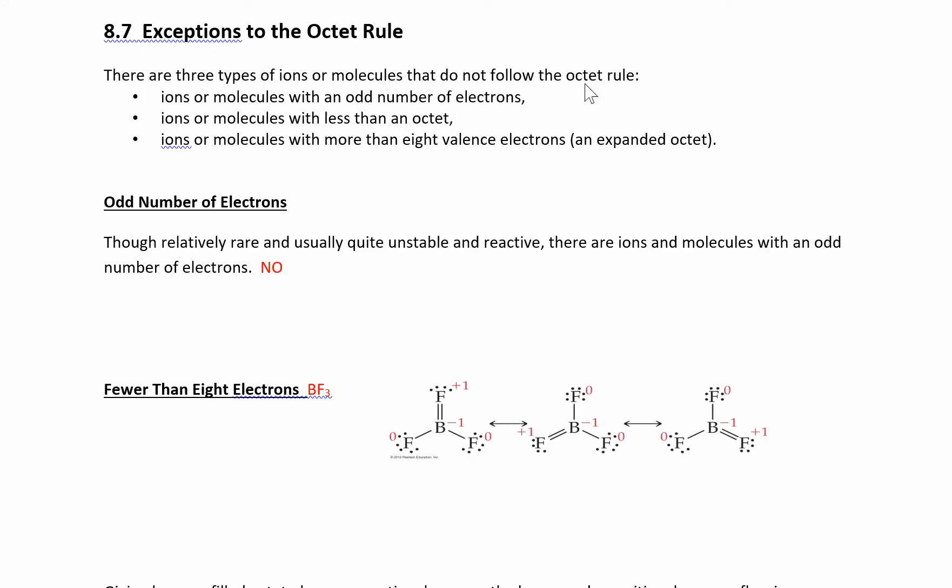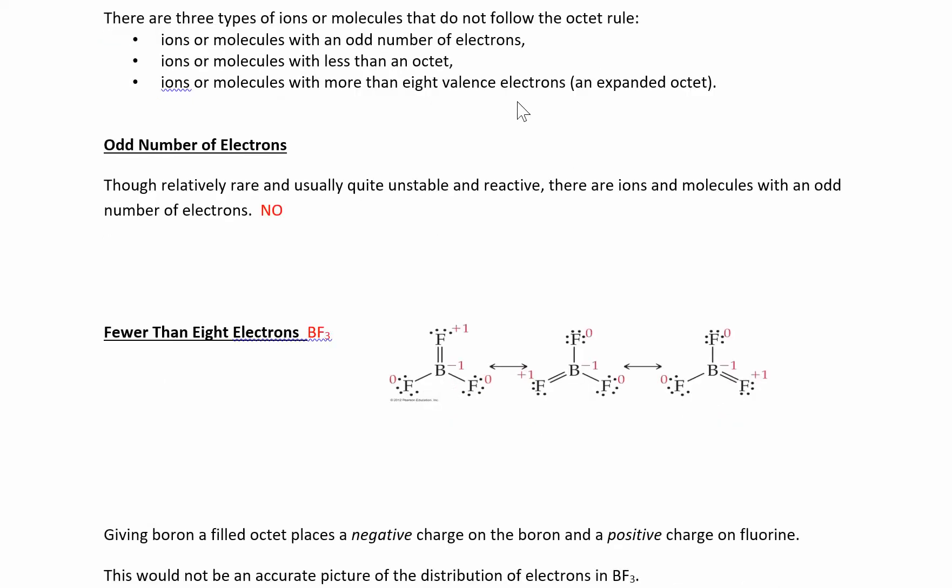You won't be able to have eight electrons around something if you only have an odd number of electrons. Remember we were putting everything in pairs. So if you have an odd number, you're not going to have pairs. Or if some ions or molecules with less than an octet, and some other things like to have more than eight electrons. You can have fewer than eight, you can have more than eight, or sometimes you have an odd number of electrons.